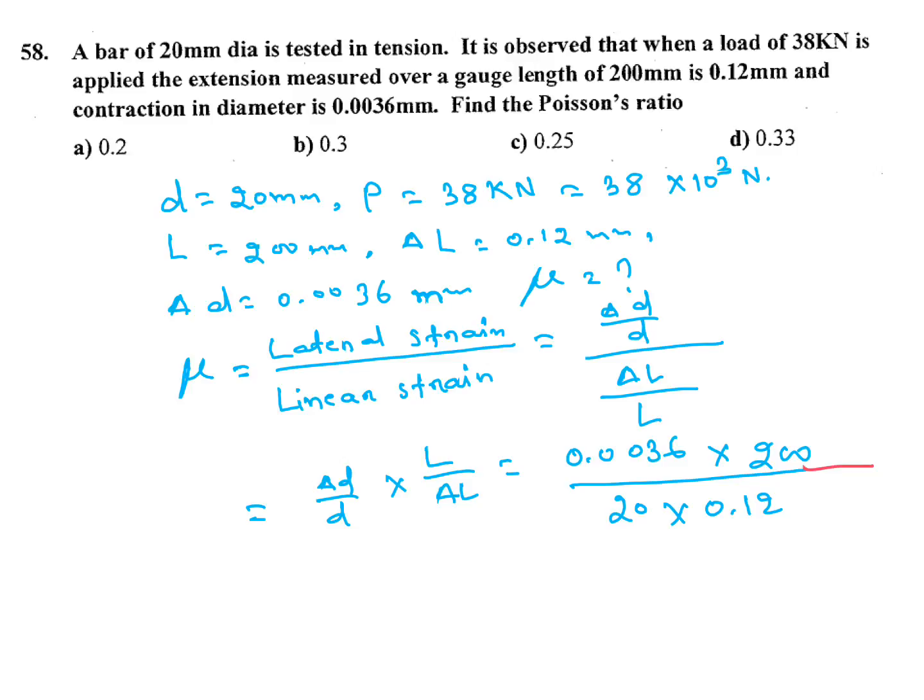0.0036 or 36 by 10,000 into L equals 200 divided by D, how much? 20 into 0.12 into L by 100. If you do the calculation, here 100 you multiply 12, 36 by 10,000. How much we will get here? 12 into 36 divided by 10 to the 3. Finally 3 by 10 is 0.3. So the answer is B, 0.3 is the answer.